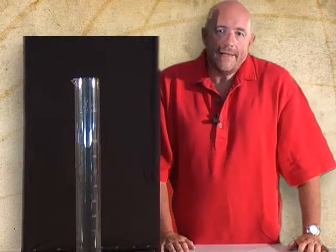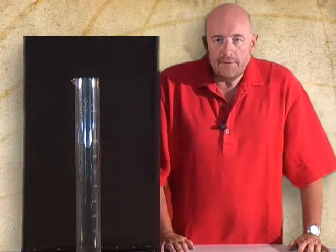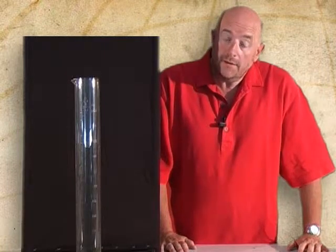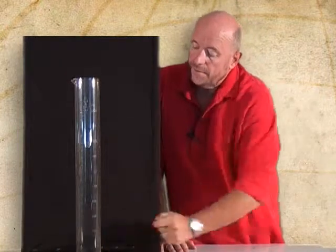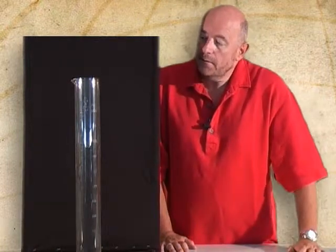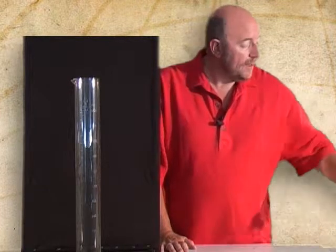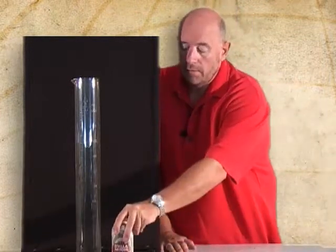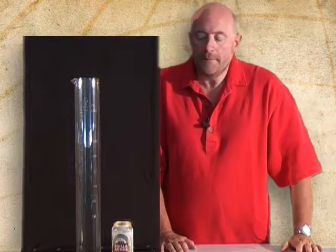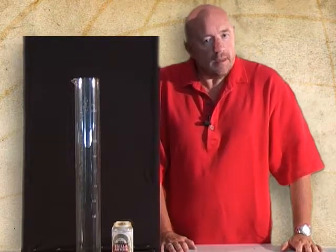A simple and fun model for showing exponential decay to A-level students in physics is using a simple glass measuring cylinder and a can of expensive beer. Actually, it can be cheap beer and it will still work.